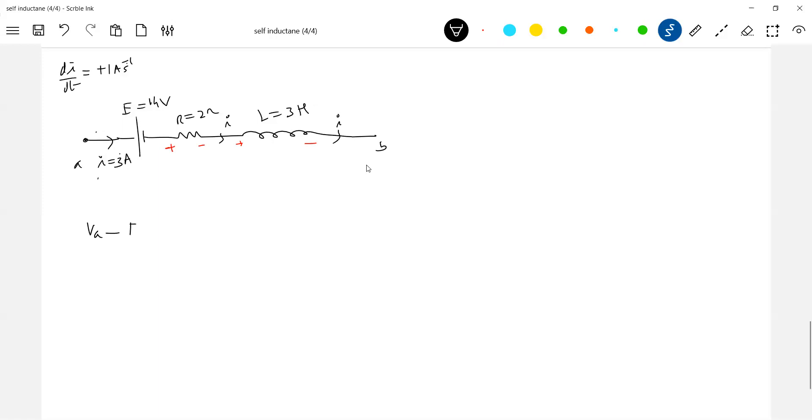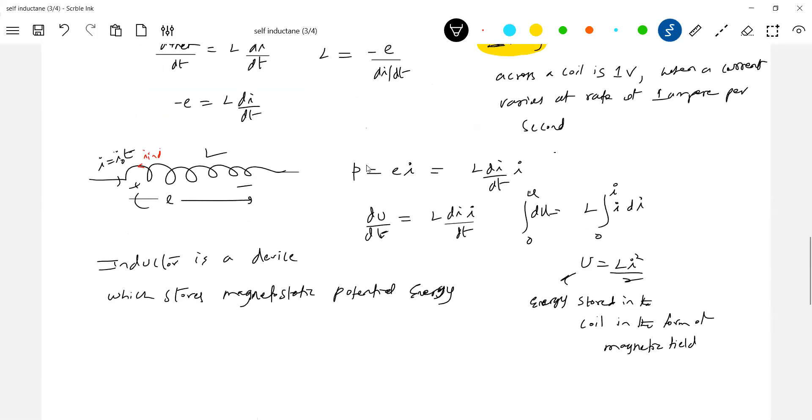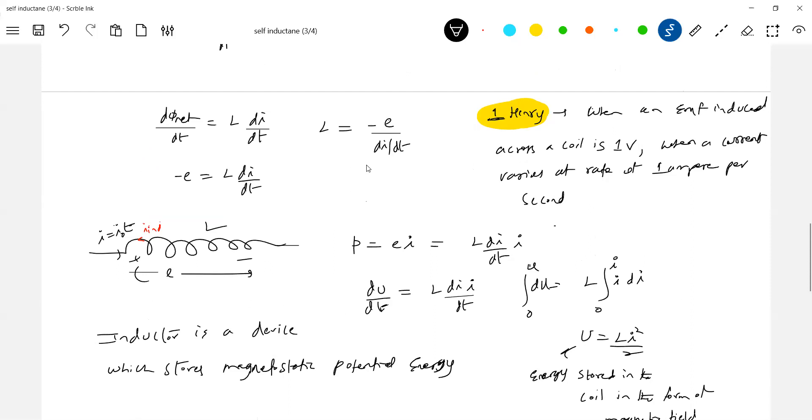From the loop equation: VA minus E minus I into R. What about here? The drop across inductor - I'm moving from positive to negative, I'll call VL equal to zero. What is VL? Potential drop across inductor.